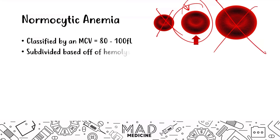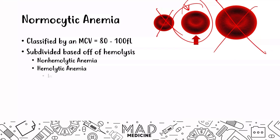Normocytic anemias can be subdivided based off of hemolysis. You can have non-hemolytic normocytic anemia and hemolytic normocytic anemia, which can be further subdivided based off of the cause of hemolysis, whether it's intrinsic or extrinsic.